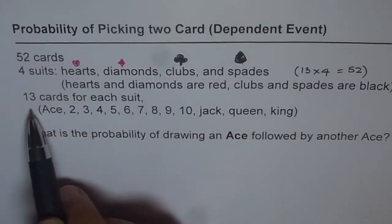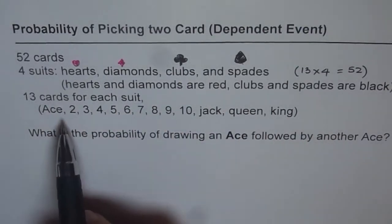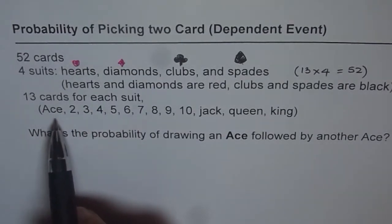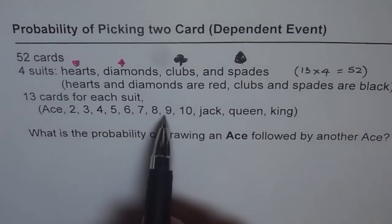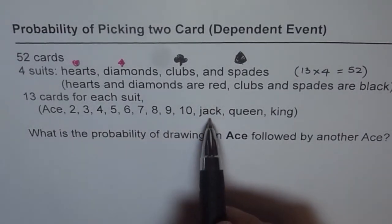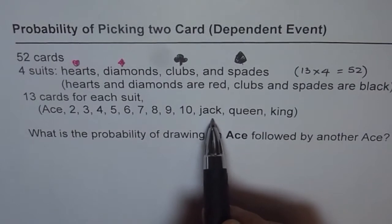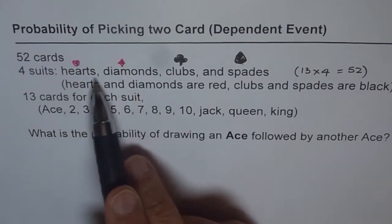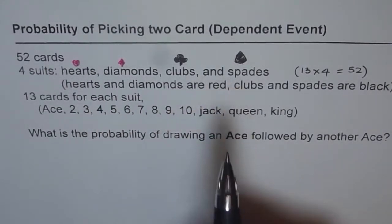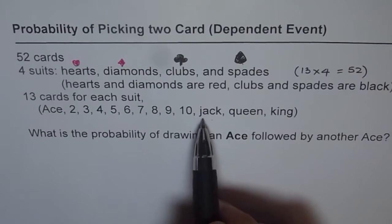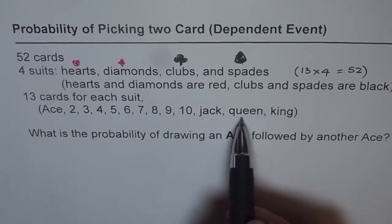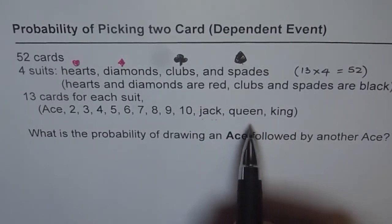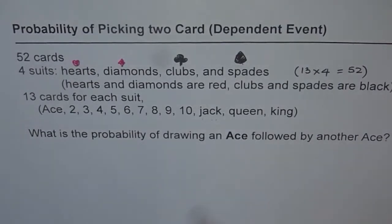There are 13 cards of each suit. The cards are: Ace instead of 1, then 2, 3, 4, 5, 6, 7, 8, 9, 10, and then we have Jack, Queen and King. These are picture cards, so there are 3 picture cards per suit. So if I say how many picture cards are there, there will be 4 times 3 — 12 picture cards in a deck of 52.